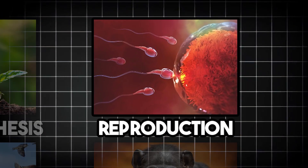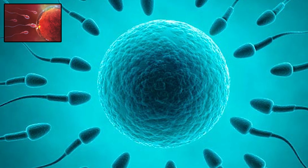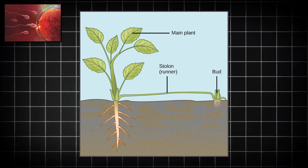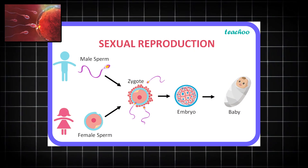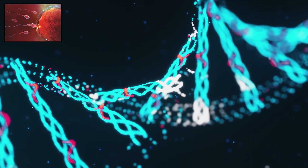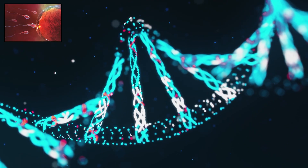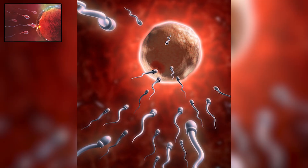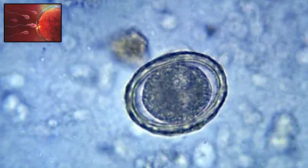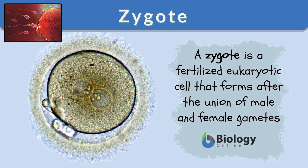Sexual reproduction is a method of producing offspring that involves the combination of genetic material from two parent organisms. Unlike asexual reproduction, which produces genetically identical copies, sexual reproduction mixes DNA to create a new, unique individual. In most sexually reproducing species, each parent contributes half of the offspring's genetic information through specialized reproductive cells. In animals, this means sperm and egg; in plants, it's pollen and ovules. When these cells combine during fertilization, they form a zygote, a new organism with a blend of traits from both parents.